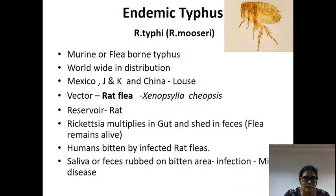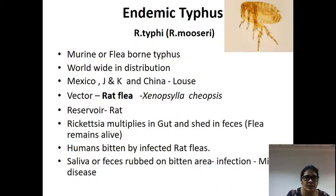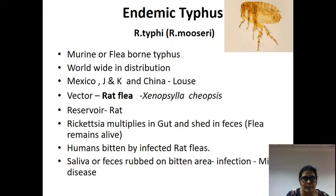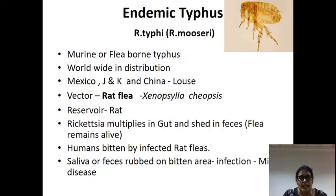Coming to endemic typhus: it is caused by Rickettsia typhi, transmitted by flea. The main reservoir is the rat. The rat flea transmits endemic typhus. When an infected rat flea takes a blood meal, the bacteria are transmitted. This disease will be less severe than epidemic typhus — endemic typhus is milder.